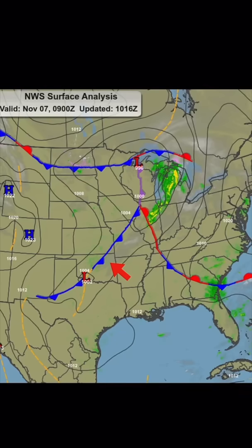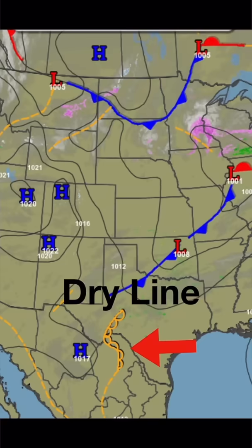Second, fronts and boundaries. Fronts equal change in wind direction, wind speed, air temperature, or all three. And that thin line called a dry line — be wary of it. Thunderstorms can be in the vicinity.